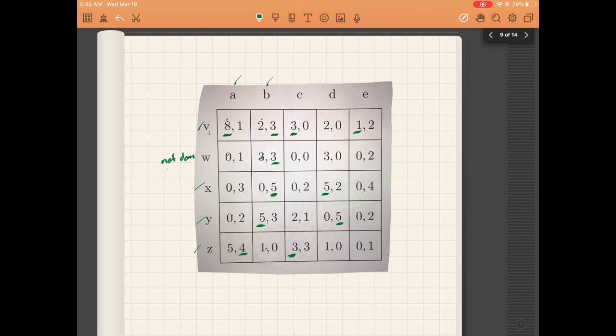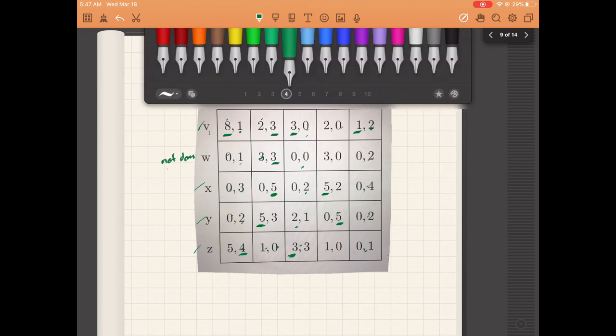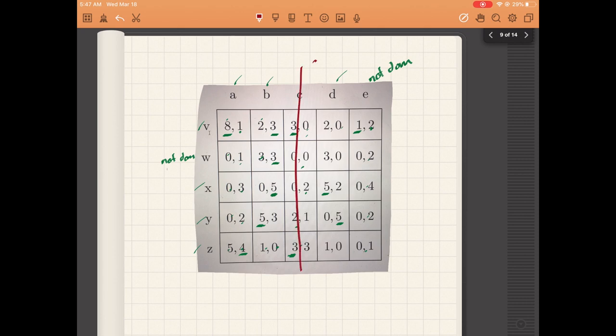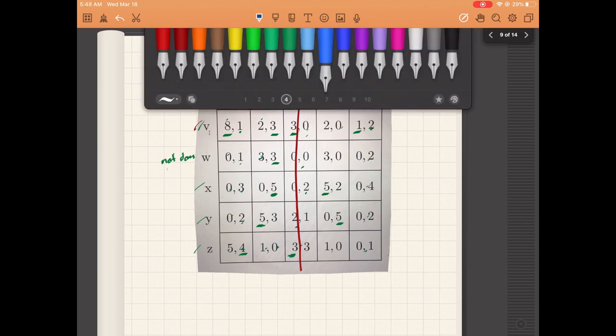Now check player two: a, b, and d are all best responses. For e, we compare with each other action and see it's not dominated. However, comparing c to a, we see every payoff from a is greater than the corresponding payoff for c, so c is dominated by a. We can proceed to the next round of elimination.